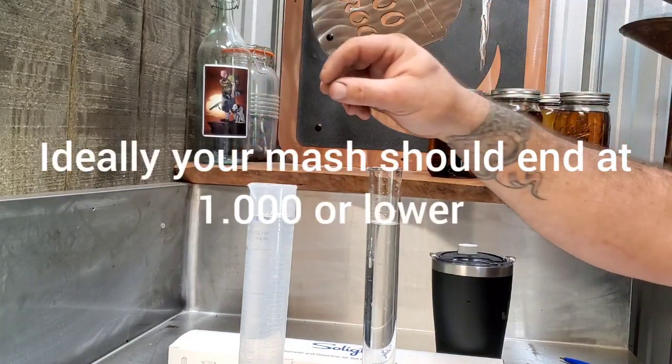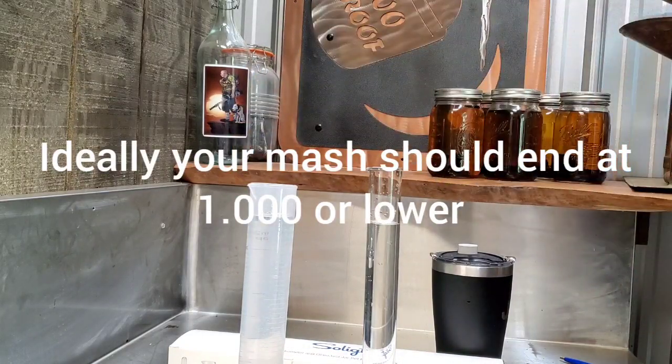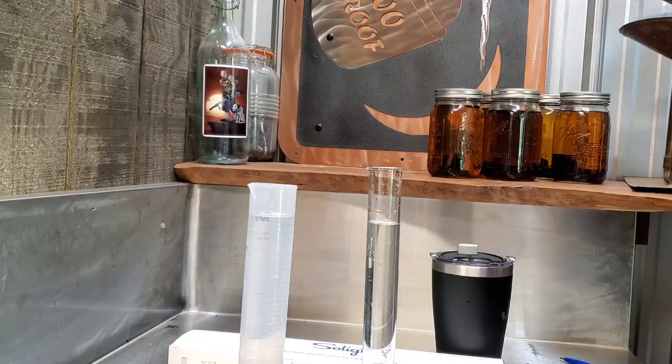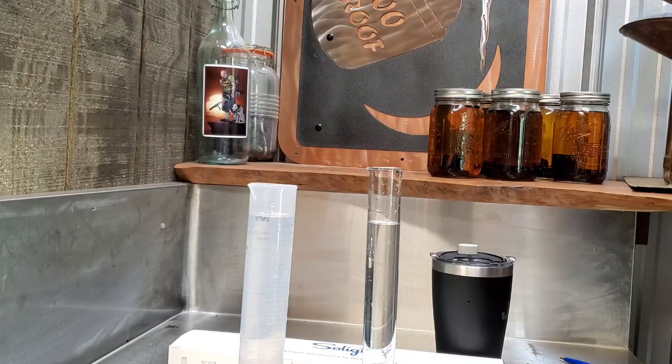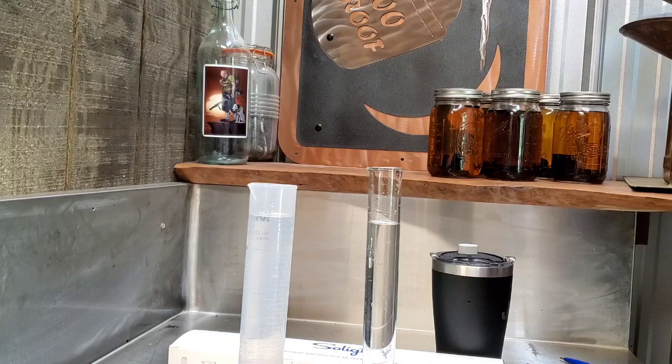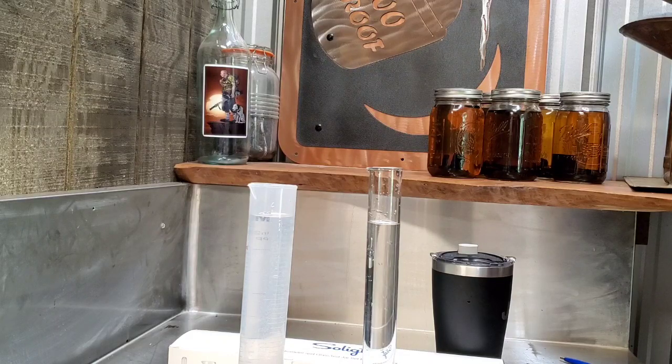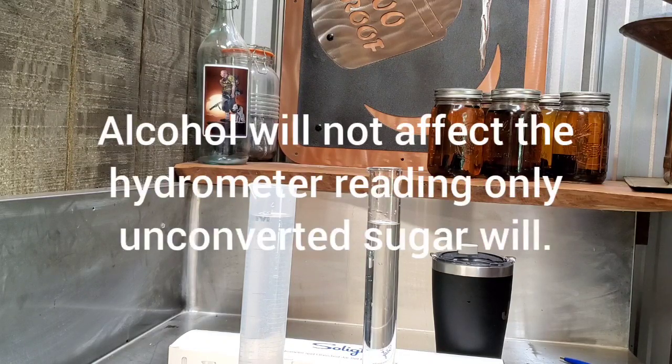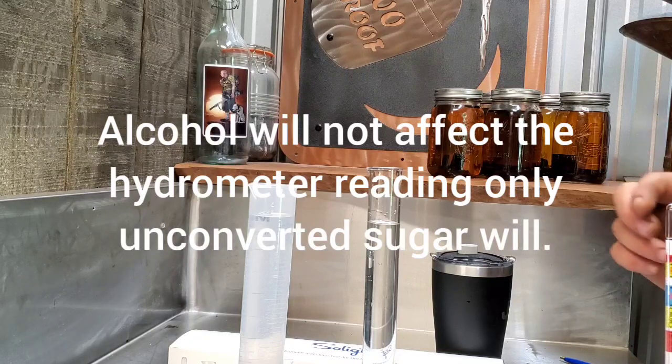That 1.000, that is what we're shooting for when we're making a liquid to distill. We want all our sugar to be 100% converted into alcohol by our yeast.